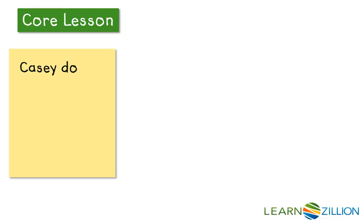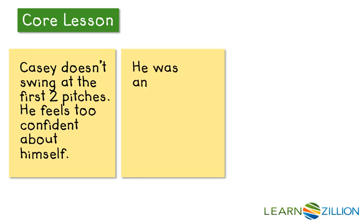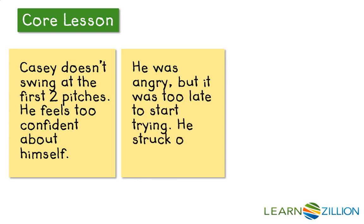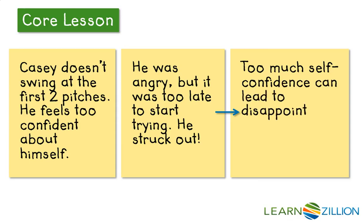So we've seen how Casey responded to his challenge. He didn't even try for the first two pitches because he thought he was better than that. And then when the final pitch came, he missed it. He struck out and his team lost. So what does this say overall about Casey? What message can we take away from the way Casey responded to his challenge? It seems to me that the message here is that too much self-confidence can lead to disappointment and trouble.